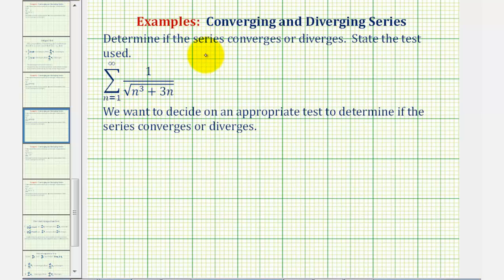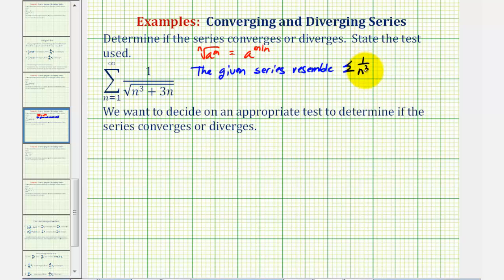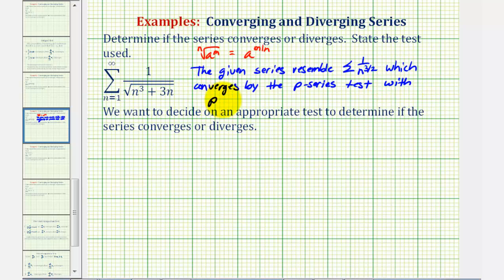Using the fact that the nth root of a to the power of m equals a to the power of m divided by n, the given series resembles the sum of one divided by n to the three halves, which we know converges by the p-series test with p equal to three halves, which is greater than one. So if we have a series that resembles a known converging or diverging series, the two most appropriate tests will be the limit comparison test or the direct comparison test.